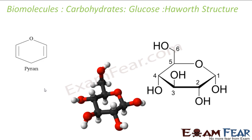The Haworth structure for glucose is almost similar to pyran — we will see that for fructose it is a little different. There is one oxygen and six carbons: one, two, three, four, five, and six. This structure is almost similar to the actual shape of glucose when you observe it with a magnifying instrument. Using optics, this is how glucose looks — this is close to the real structure of glucose.